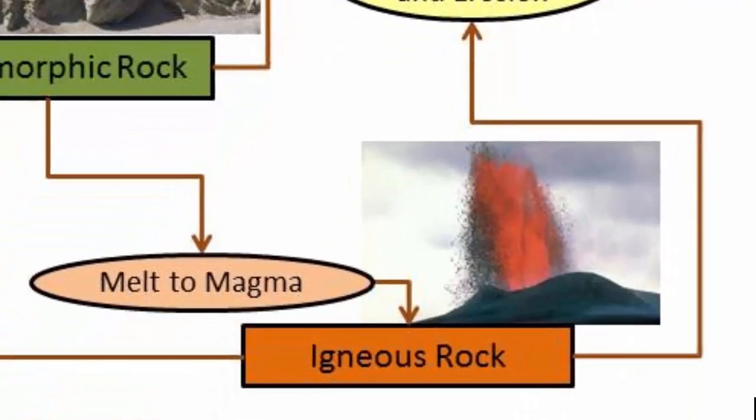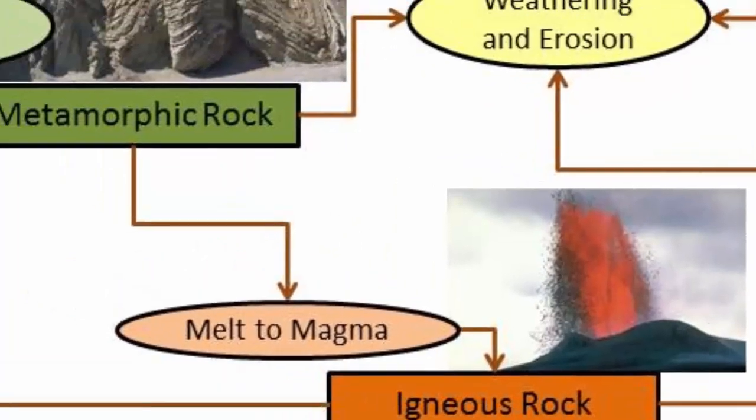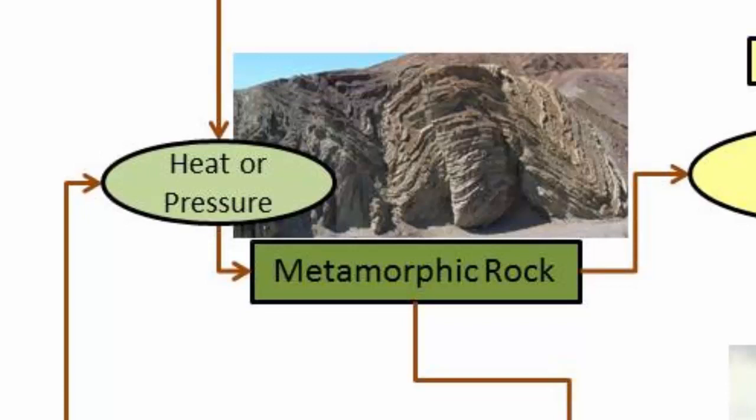Igneous rocks are those that formed after molten magmas or lavas cool and solidify. Metamorphic rocks are those that have changed chemically or physically due to increased temperatures and/or pressures.